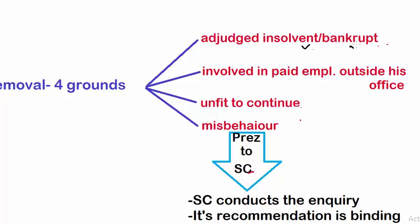Removal is done on four grounds. First, if they are adjudged insolvent — meaning the judiciary has declared them bankrupt. Second, if they are involved in paid employment outside their office. Third, if the President considers the member or chairman unfit to continue because of mental or physical inability. Fourth is misbehavior, which is a very important ground.